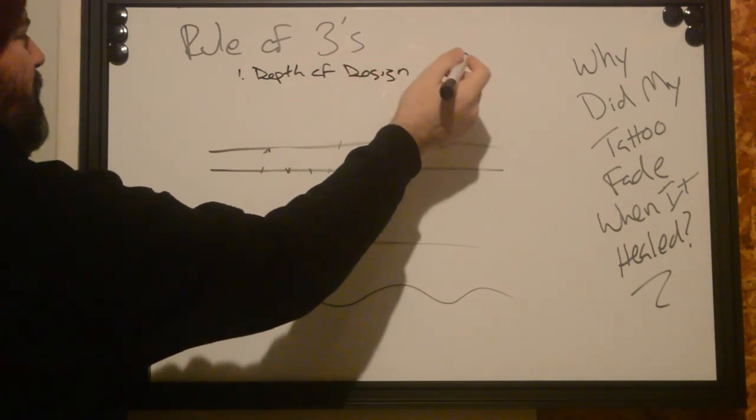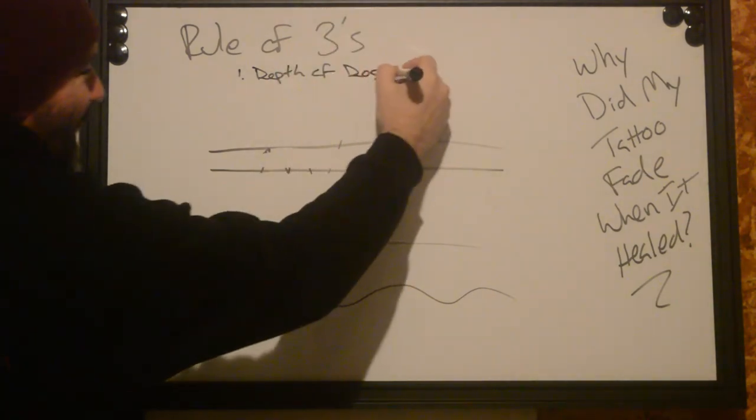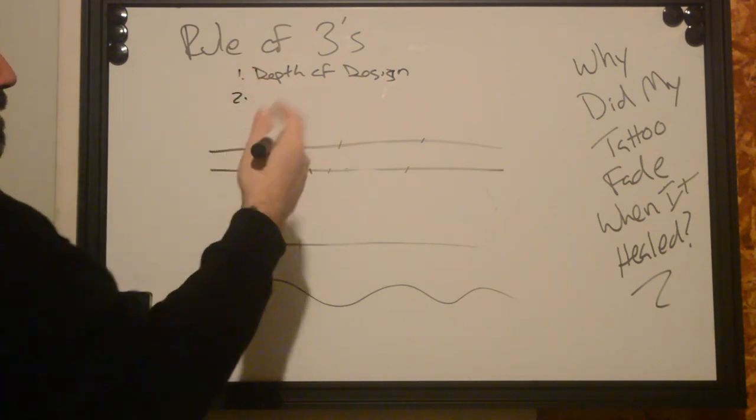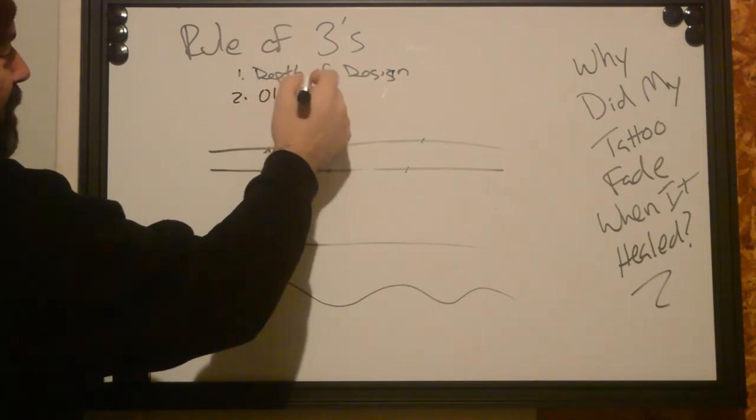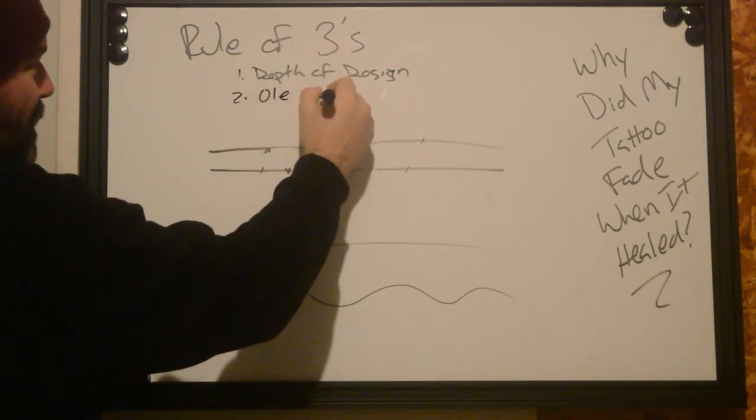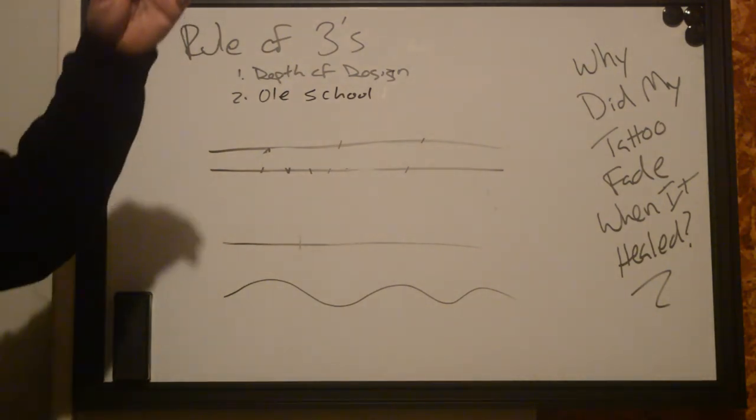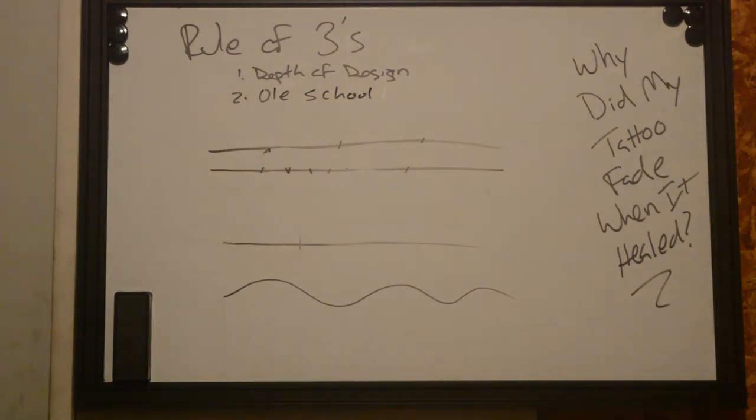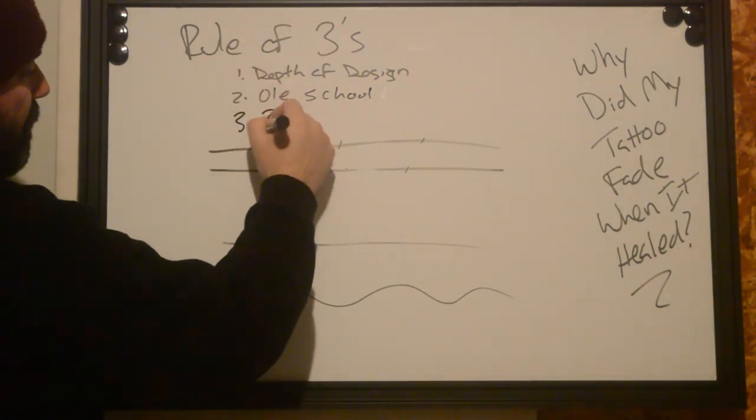Boy, I'm not doing well spelling today. Penmanship. Anyways, depth of design. The other one's going to be the old school. Old school, they want to have a third shading, a third color, a third skin. The next rule of three that we're going to have is three and done.